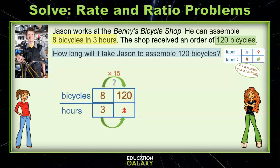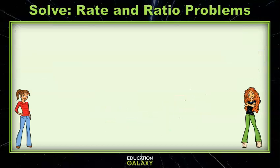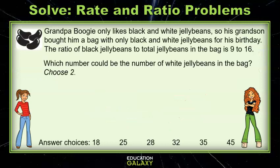I know that 8 times 15 is 120, but if you didn't know this, simply do 120 divided by 8. 3 times 15 is 45, so it will take Jason 45 hours to assemble the bicycles. Whew, I'm glad that's Jason and not me.